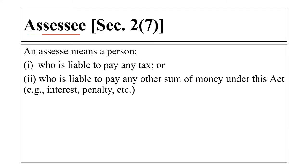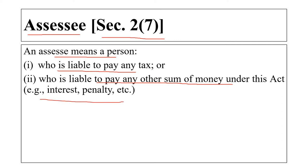Then there is 'Assessee', given under Section 2 clause 7. An assessee means a person who is liable to pay any tax or any other sum of money such as interest or penalty under this act. For example, if I am paying tax on my salary, then I am the assessee for that particular assessment year.